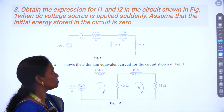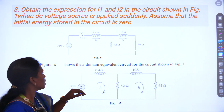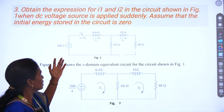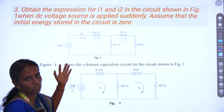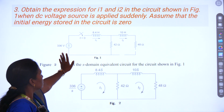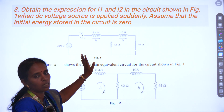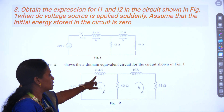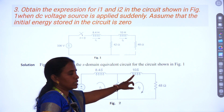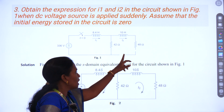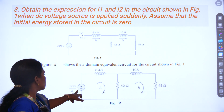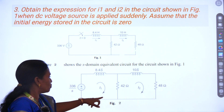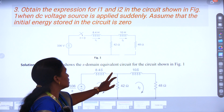Here we can see one problem: obtain the expression for I1 and I2. The initial condition stored in the circuit is zero. This is the given circuit. First, we need to convert it into the S domain. Inductance 8.4H becomes 8.4S, and 10H becomes 10S. The resistors remain 42 ohms and 48 ohms. The voltage source is changed to 336/S. Now we need to find currents I1 and I2.